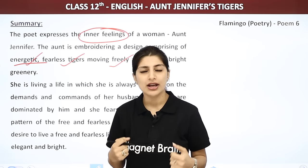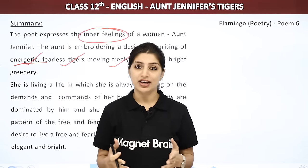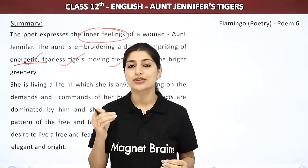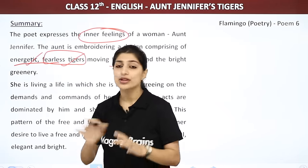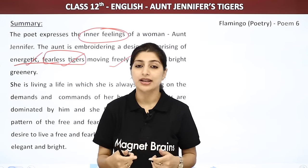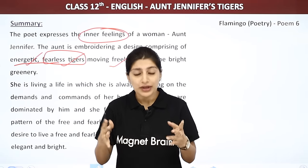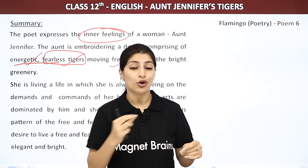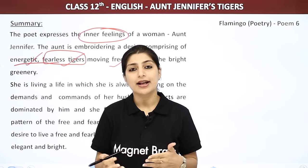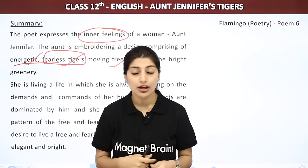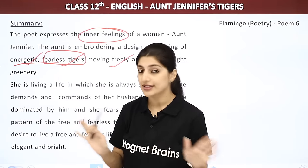Tiger bahut energetic hota hai, bahut strong hota hai — jo ki aunt ke bilkul opposite hai, kyunki aunt bilkul energetic feel nahi karti. Woh bahut weak feel karti hai kyunki poori zindagi usne apne husband ke liye bahut kaam ki hai. Tiger fearless hota hai, jise kisi se dar nahi lagta — again aunt ke opposite, kyunki aunt hamesha bahut darti hai apne husband se. Unki ungliyan kaanp rahi hain jab woh embroidery karti hain, kyunki unhe dar lagta hai ki unke husband aa jayenge aur unhe daantenge.